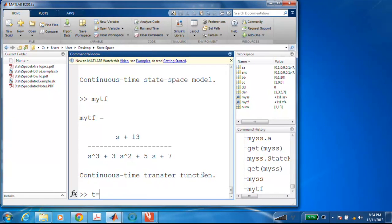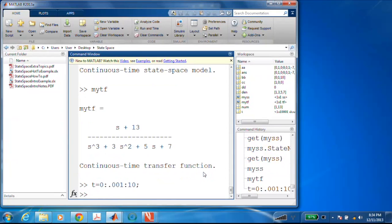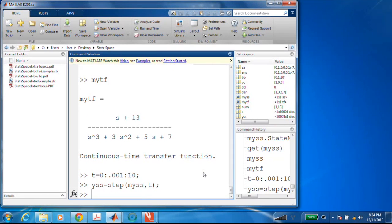We'll make a time array from zero at a thousand Hertz up to maybe five seconds. Now let's go to 10 seconds. And now we'll use the step command in MATLAB. So I will create an output called YSS. So this will be for our state space system. So YSS equals step, my SS. And I have to give it that time vector as an argument. And so it just generated a step response and stored it in YSS. YTF is similarly like so.